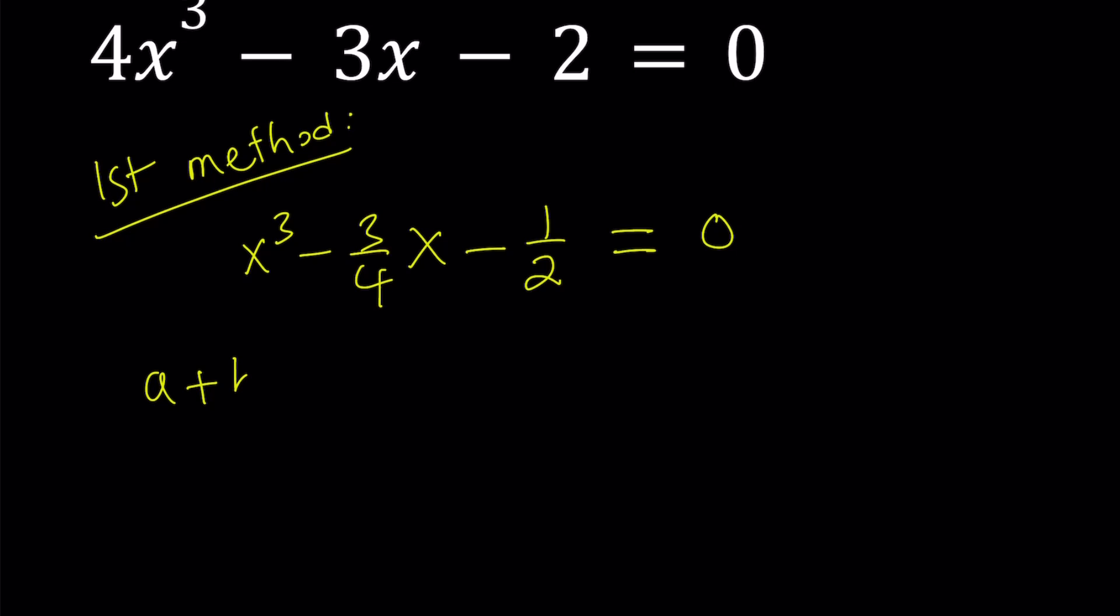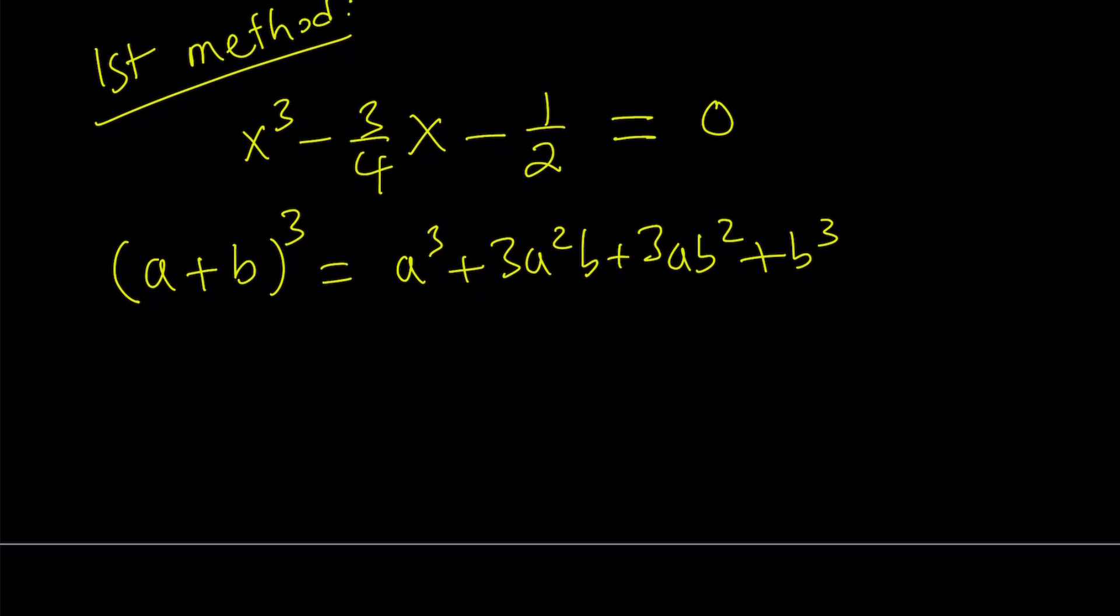Consider the expansion, the binomial theorem for cubics, a plus b to the third power. You know that we can write this as a cubed plus 3a squared b plus 3ab squared plus b cubed. But we could also arrange these terms a little bit to make it more, I don't know, just put it in a nicer way. a cubed plus b cubed, and then put the 3ab terms together and factor.